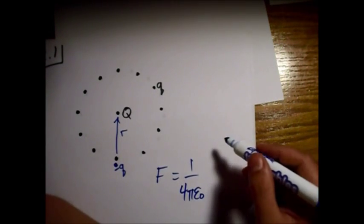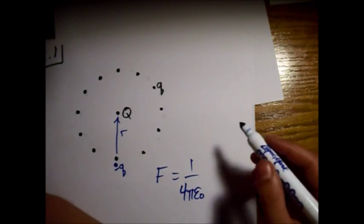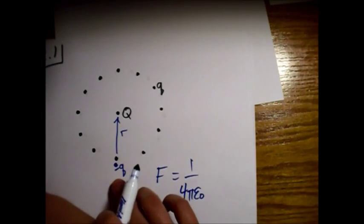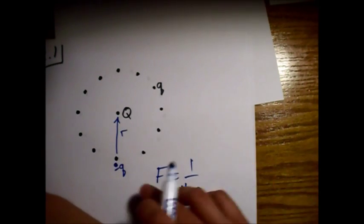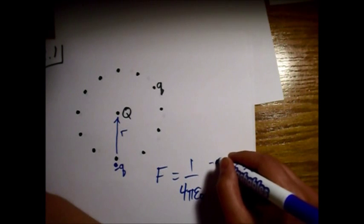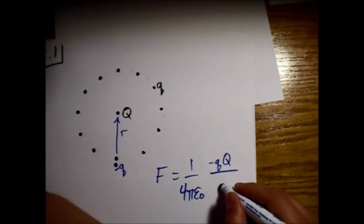And then we have our, because before the force was 0, so now the force is just the force looking at this minus q, and that's over this distance squared.